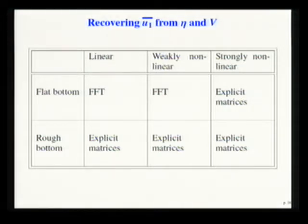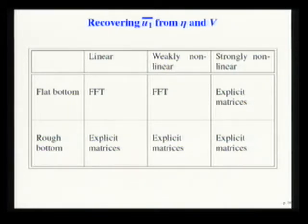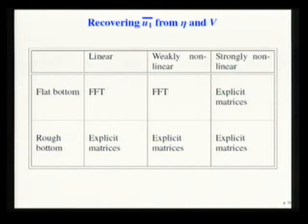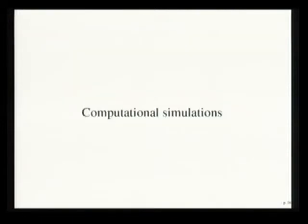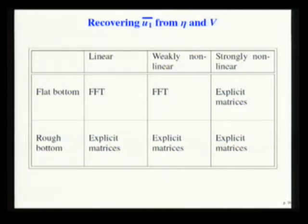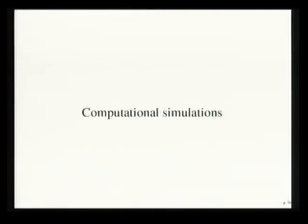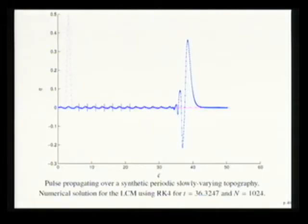In the case of variable coefficients or strongly nonlinear models, we have to use explicit large matrices, because describing the topography requires many points. We are currently studying the use of the alternating trapezoidal rule, which halves the effective points involved in the computation, with beautiful properties of the corresponding circulant Toeplitz skew-symmetric matrices that allow coupling of computations — Saulo will explain that much better.